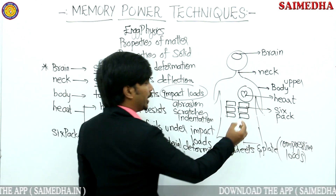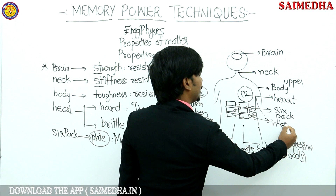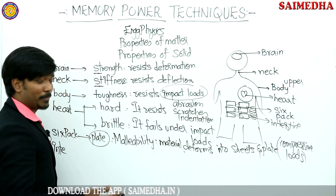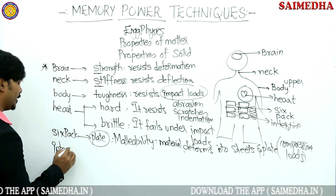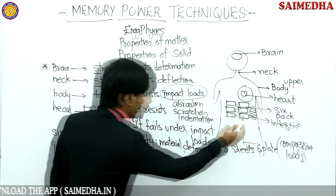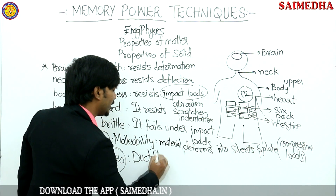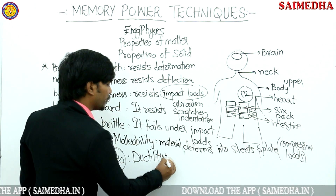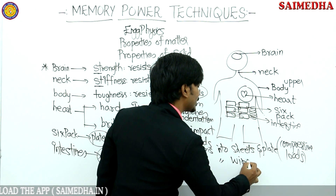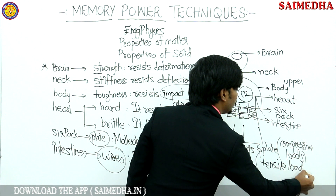Inside the six-pack area, we have intestines. These intestines are in the shape of wires. Whenever wires are mentioned in a question, you need to remember the property called ductility. Ductility is the property by which a material deforms into wires under tensile loads.